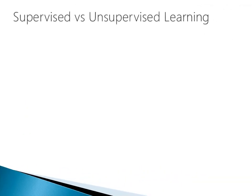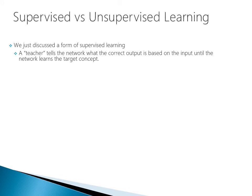What we have discussed so far is a form of supervised learning. All supervised learning means a teacher is telling the network what the correct output is based on the input, until the network learns the target concept. From a data standpoint, we know what our response variable is — we have it in our data set — and we're feeding the information into the artificial neural network and saying: understand the relationship of our independent variables to the dependent variable.